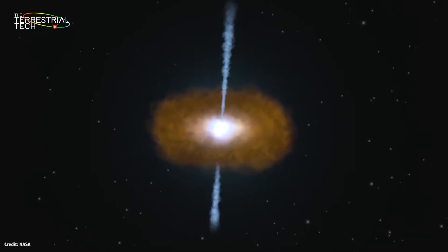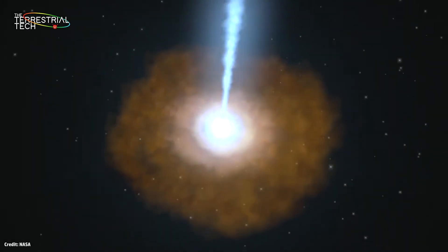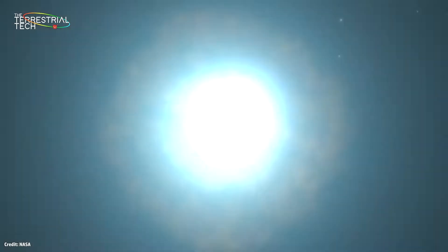Therefore, the only difference between a blazar and a quasar is that when we look at it at an angle, we call it a quasar, but when these jets directly come towards us, then we call it a blazar.